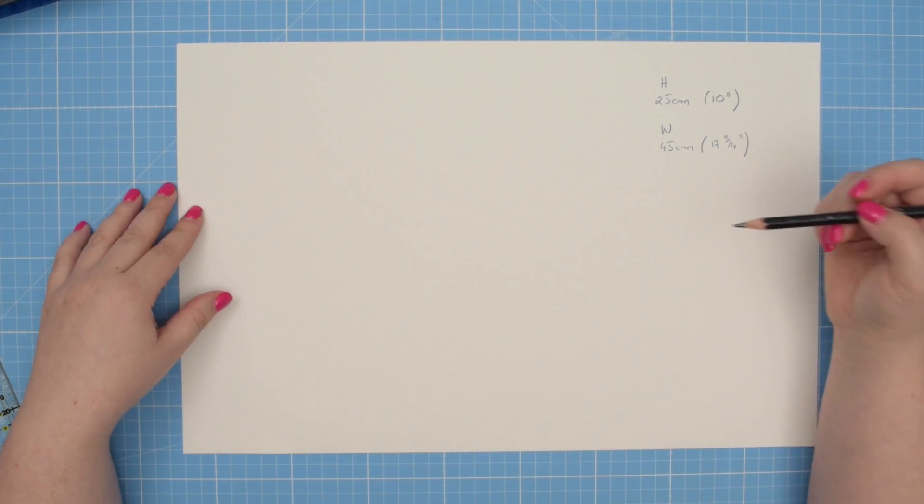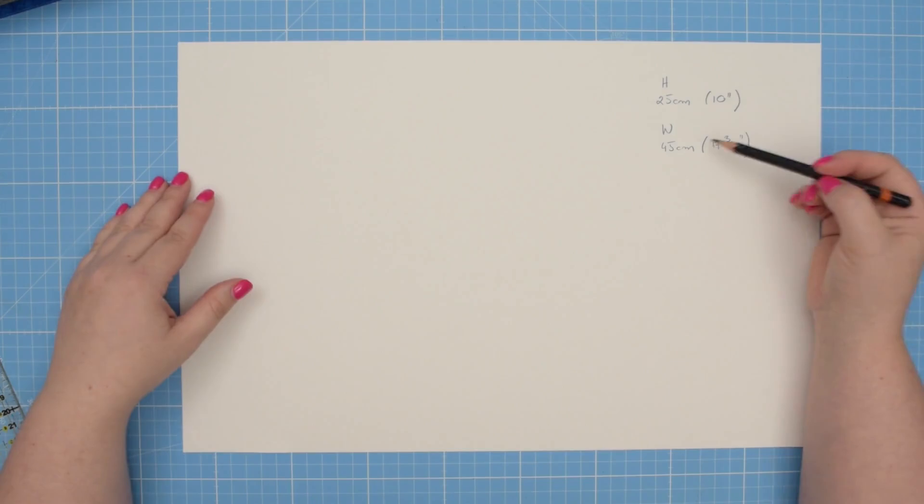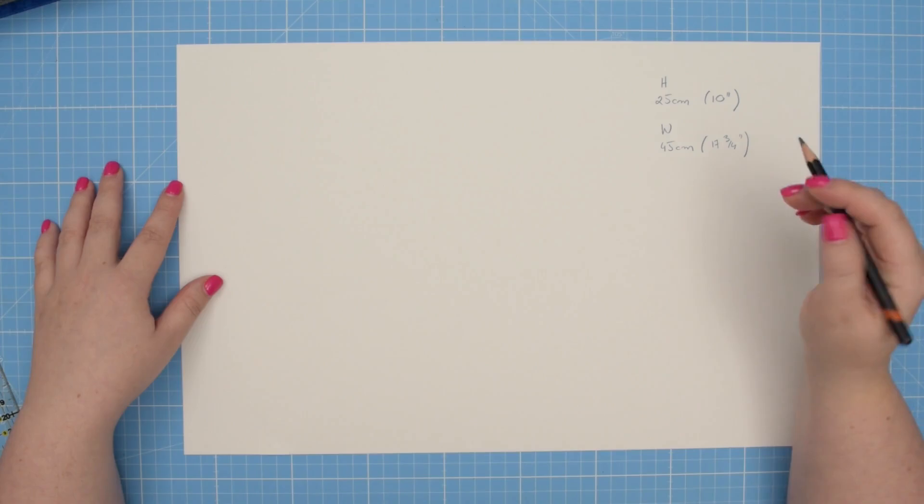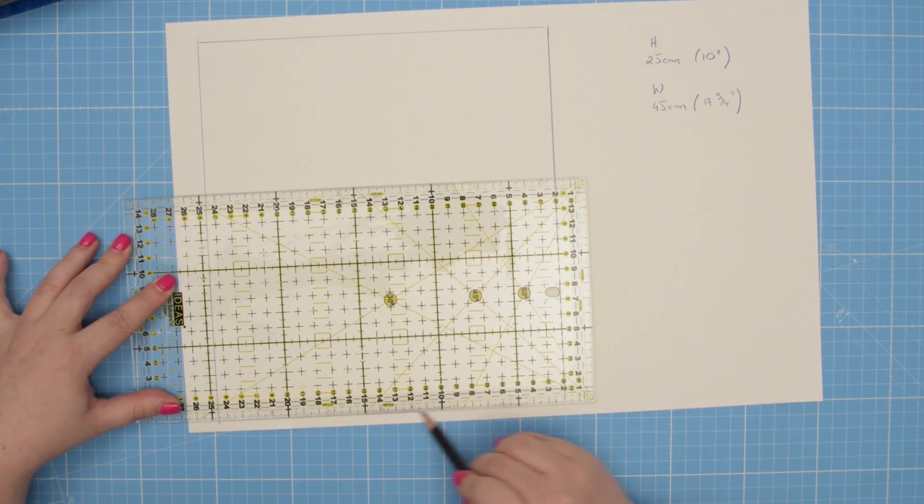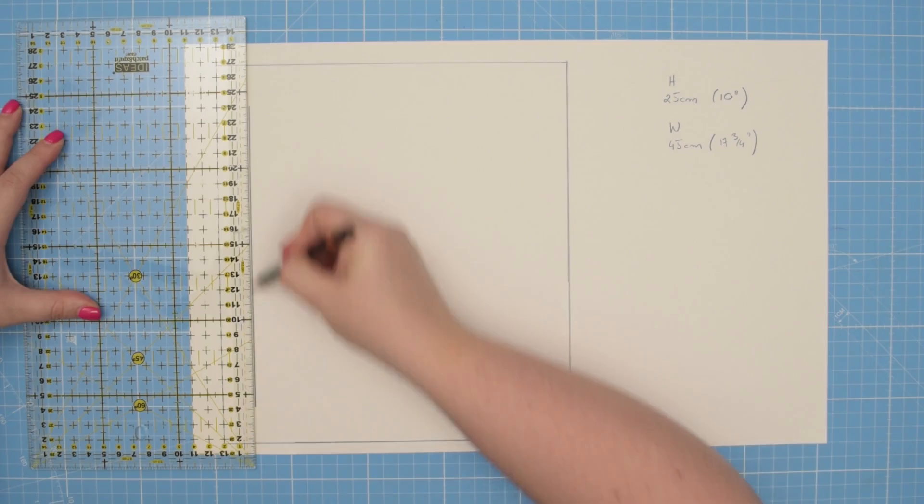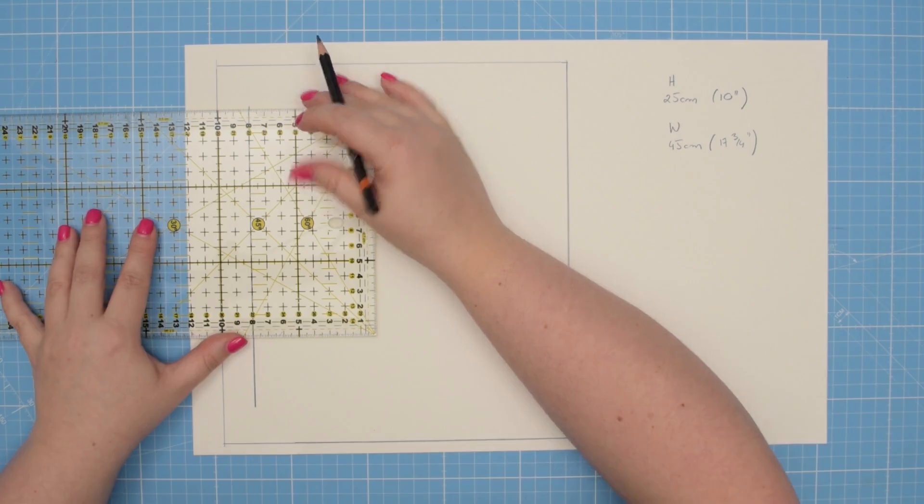Once you have those measurements, you can start drafting your pattern pieces. Because my paper is not wide enough to accommodate the entire pattern piece, I'm going to divide that measurement in half and draft only half of the pattern. Here we go, just like that. Since I have drafted only half of my pattern, I'm going to make sure that I mark that edge. This is going to be my fold line.